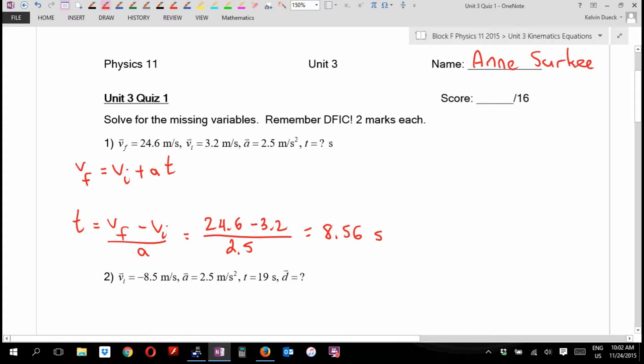By the way, technically I should go to two sig figs. So technically you should go 8.6 seconds. I'm not emphasizing sig figs. So if you left it at 8.56, I'm fine with that. Otherwise I would give you one mark if I saw that. Half mark for the numbers and a half mark for the answer.